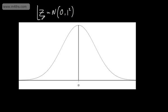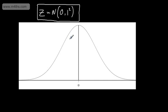This is the standard normal distribution, so we've got a random variable Z which follows a normal distribution with mean 0 and variance 1. The graph below shows the standard normal curve — with a mean of 0 and a variance of 1 — and as you can see, it's symmetric about 0.